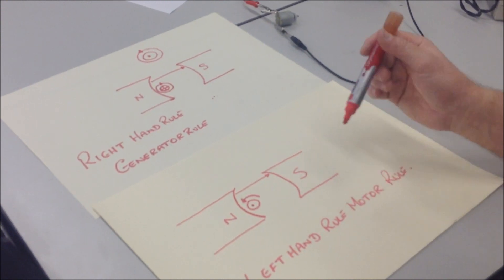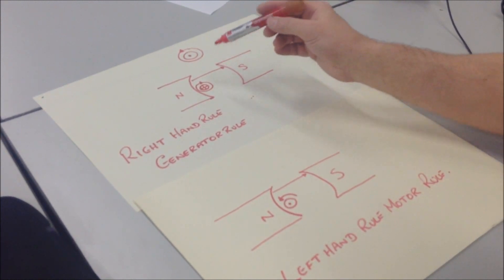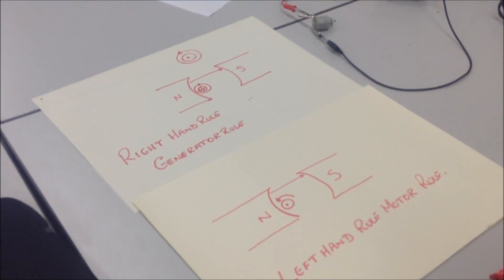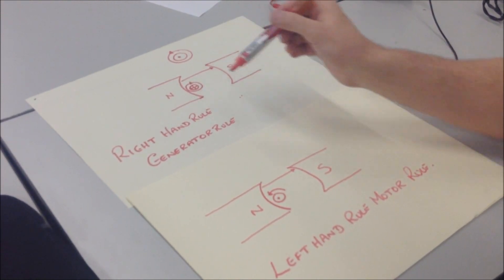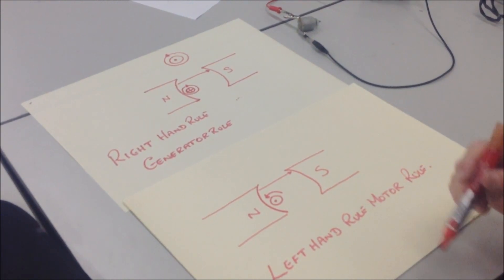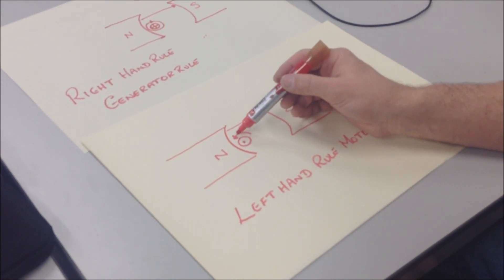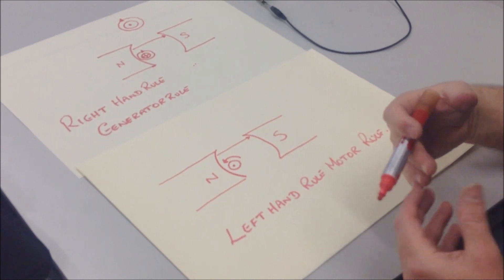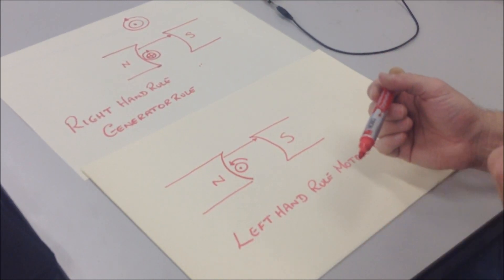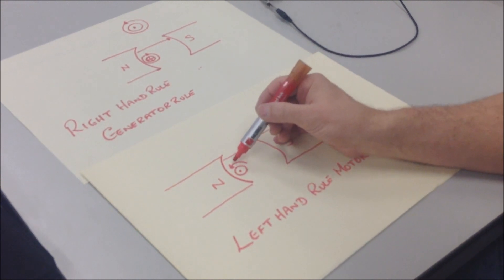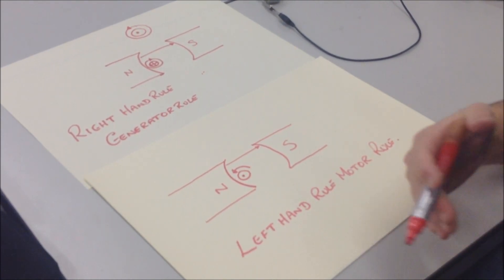Now Faraday's Law tells us that whenever we move a conductor in a magnetic field, that conductor will have a voltage induced across it, which causes a current to flow through the conductor. The conductor, though, always sets up a magnetic field, which is an opposition to the movement. So if we try to move a conductor through a magnetic field, the current flowing through the conductor will set up a magnetic field, which is an opposition to that motion. And this is called Lenz's Law.